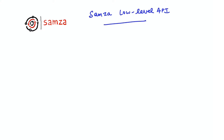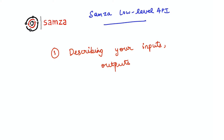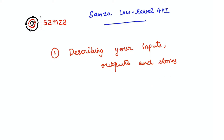Here are the steps involved in building an application using the low-level Task API. The first step is describing your inputs, your outputs, and your stores. In this step, we'll describe the input systems and streams that your job is interacting with. For example, you want to consume from a specific Kafka cluster and from a specific Kafka topic called pageview event, and output results to another topic called filtered pageviews.